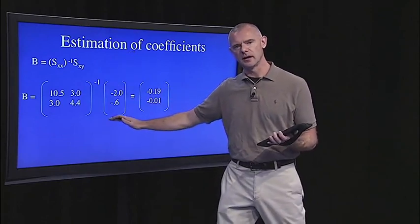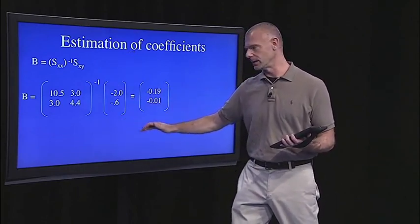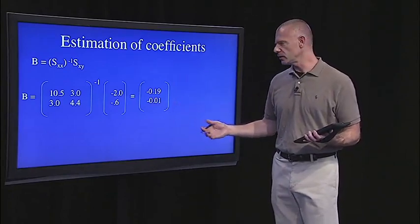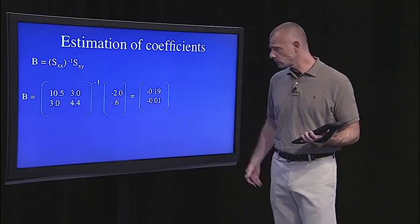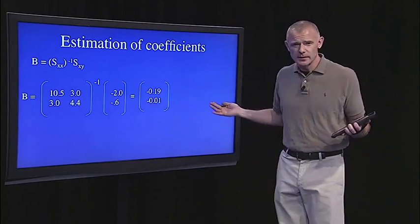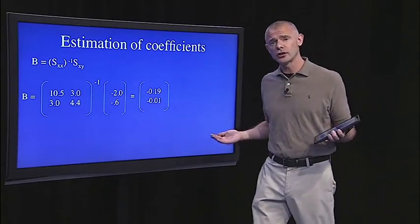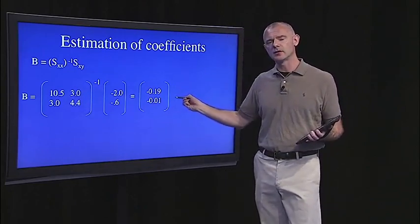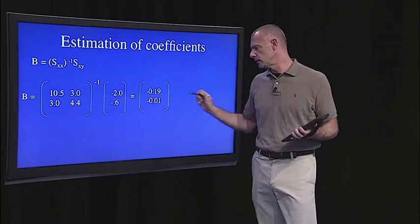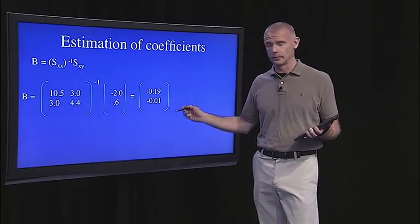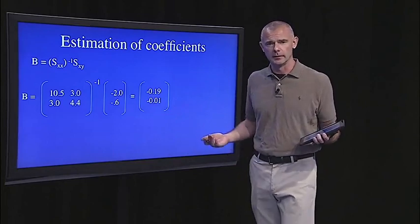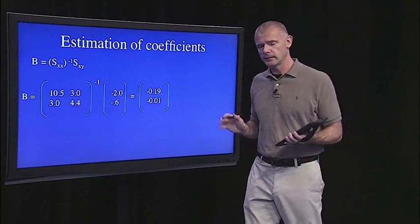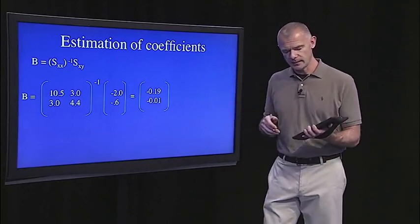If we carry out this calculation—and I've spared you the details of inverting a matrix because it's actually a bit tedious—but if you wanted to walk through all the calculations, you would get this final result. What are these numbers? What does this mean? Those are the regression coefficients for this example. So this is the slope relating X1 to Y. This is the slope relating X2 to Y. So clearly X2 is not related to Y. The slope's almost zero.